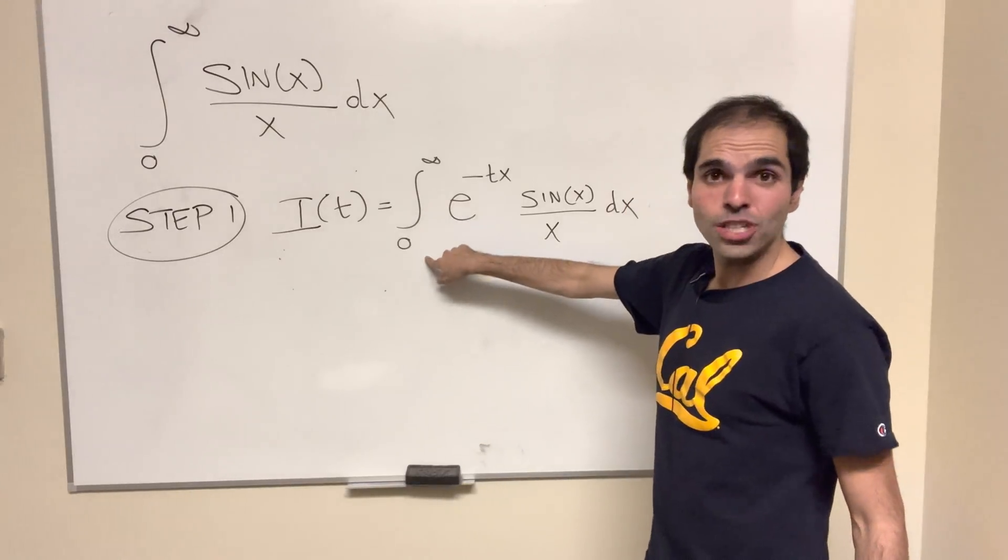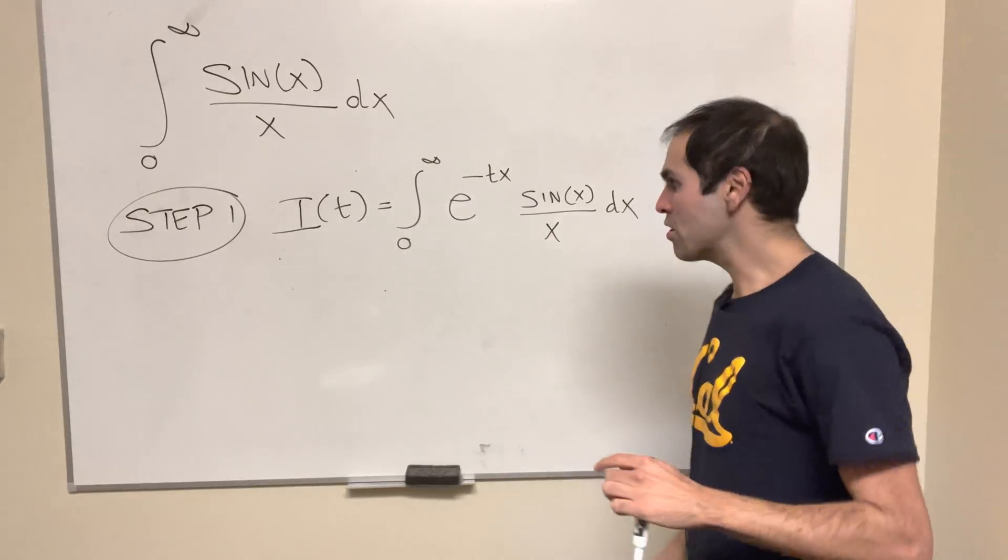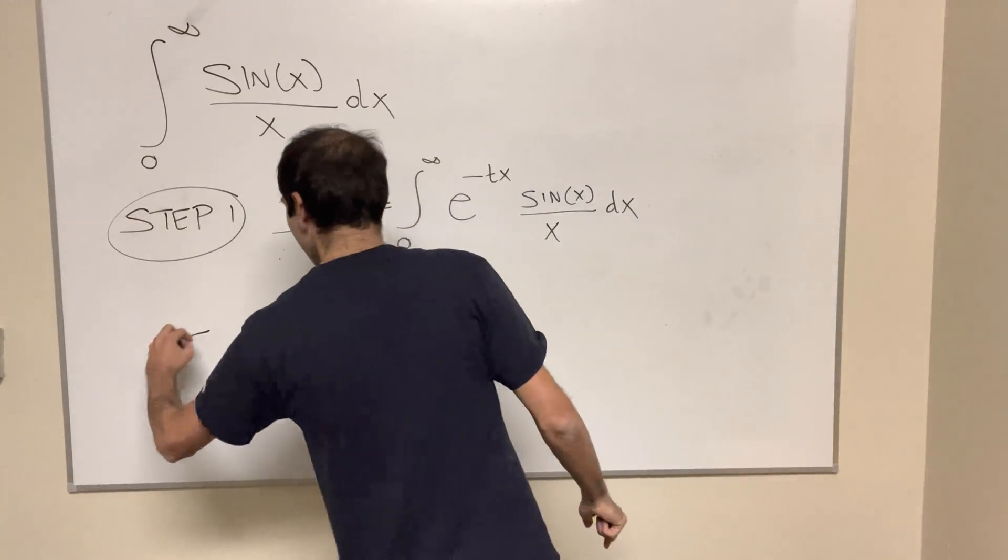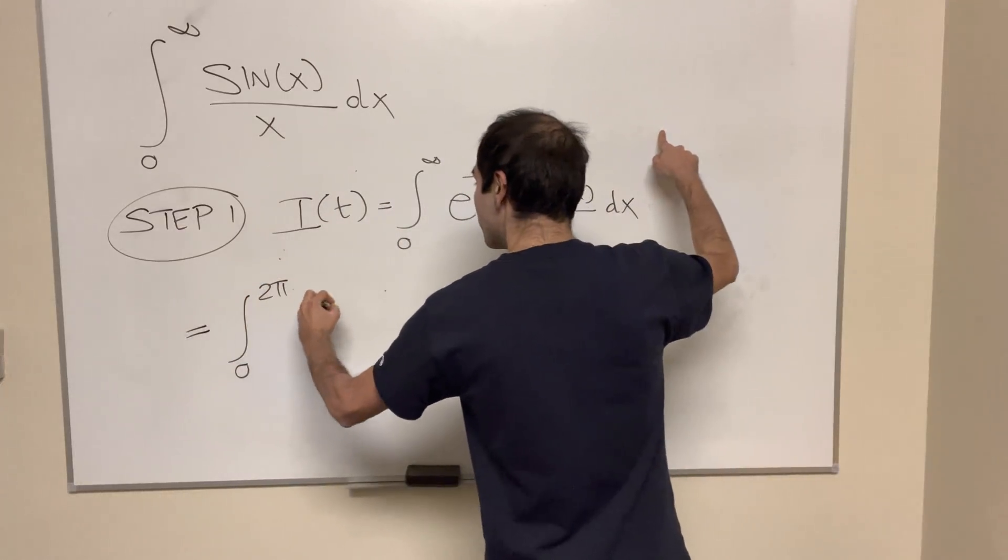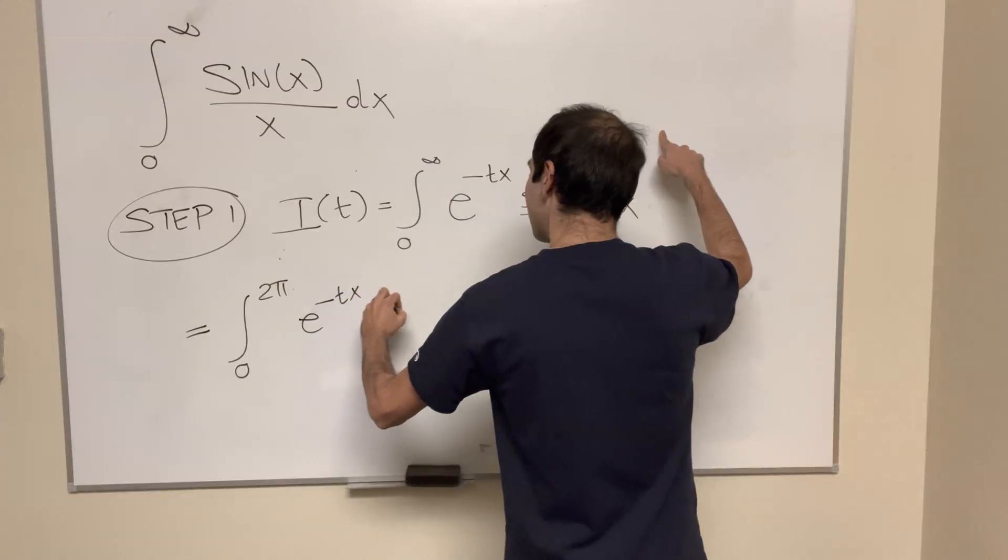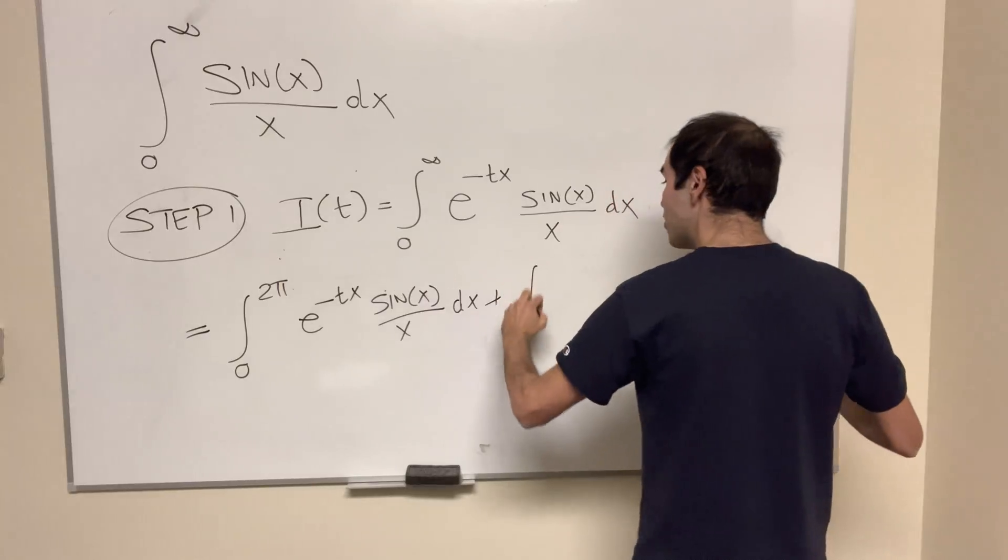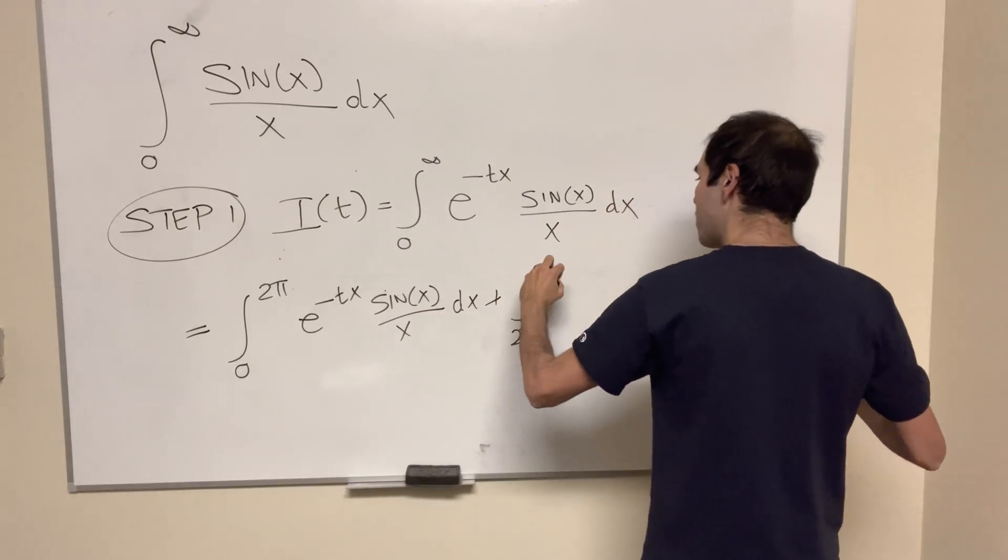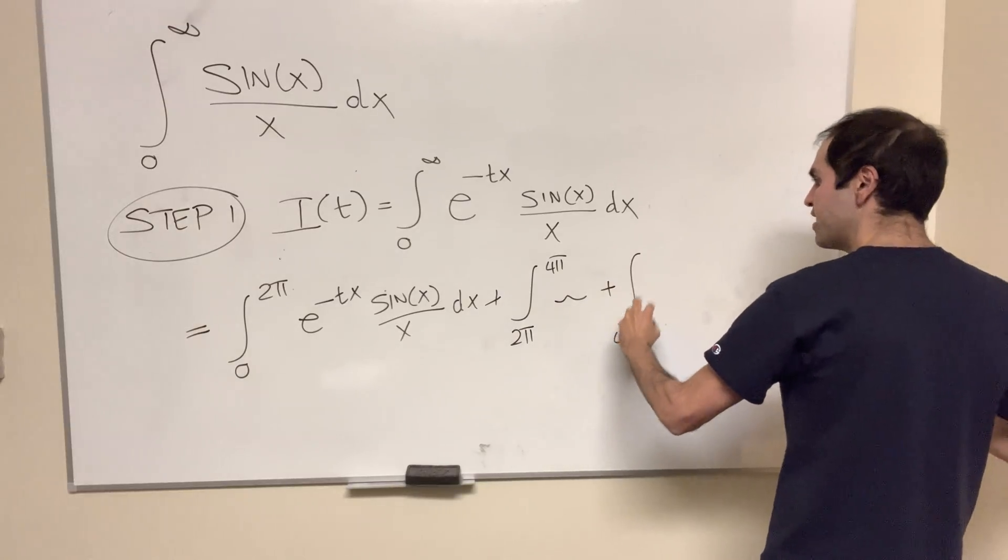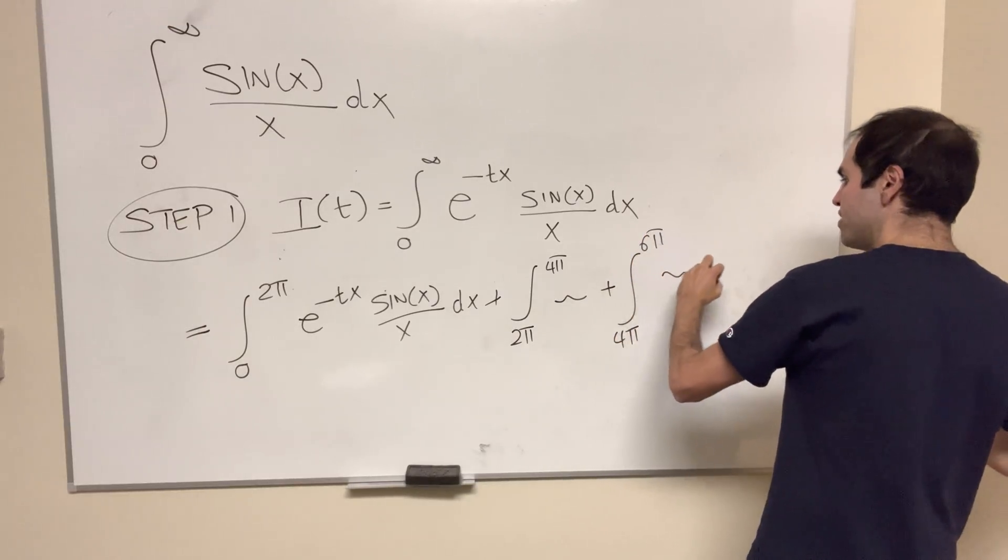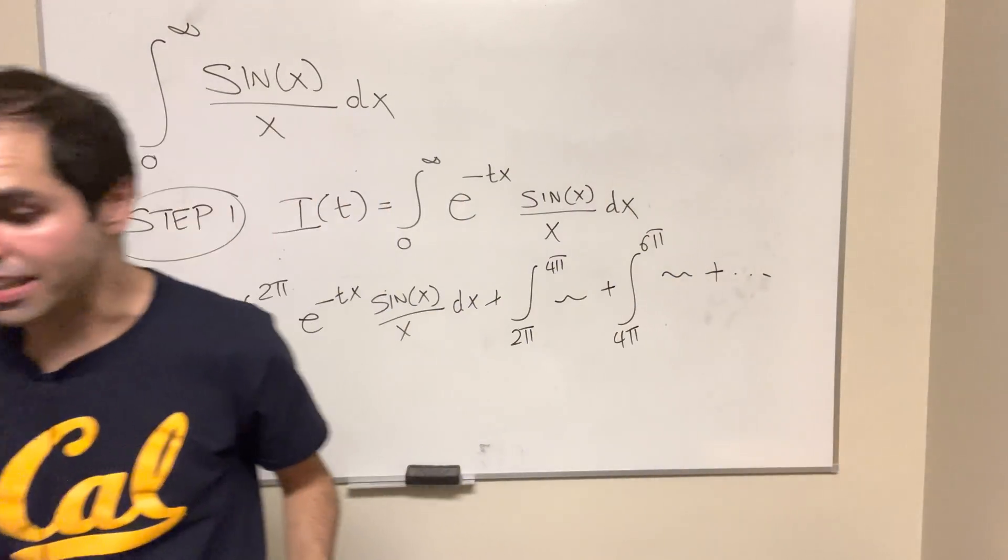Not only that, let's now split up the region from zero to infinity into smaller intervals. So this becomes integral from zero to 2π of this gibberish, e^(-tx) sin(x)/x dx, plus integral from 2π to 4π of the same thing, plus integral from 4π to 6π of the same thing, et cetera. So we get this infinite series in fact.